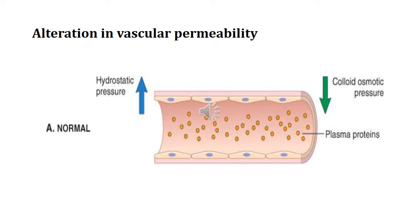However, in certain cases the hydrostatic pressure increases — for example in congestive heart failure — so there is increased fluid moving out of the capillary into the interstitial fluid. This fluid leakage is called transudate. In the case of inflammation, there are increased endothelial spaces because histamine increases the gap between the endothelial cells. Because of that, excess fluid leaks out and plasma proteins enter into the interstitial fluid, resulting in leakage of a large amount of fluid.